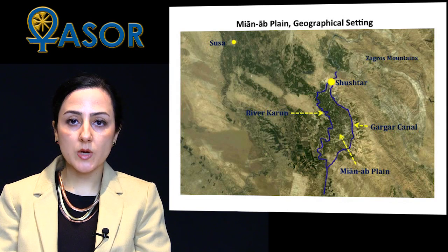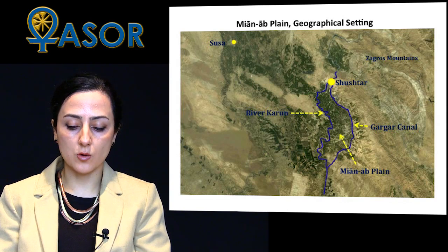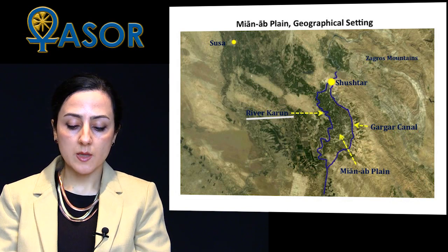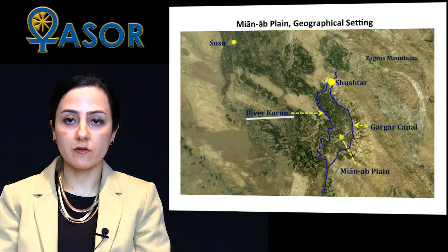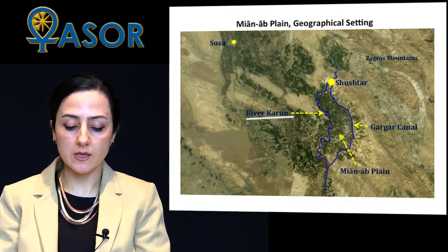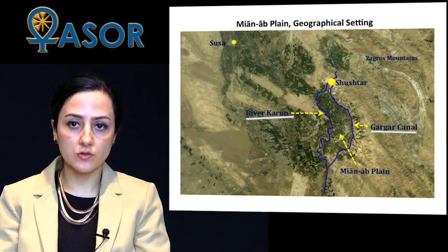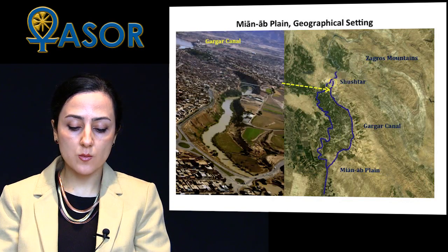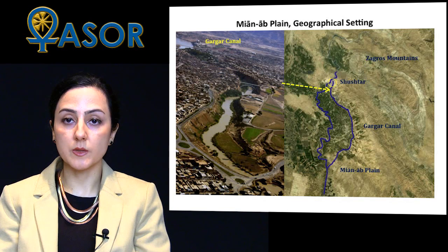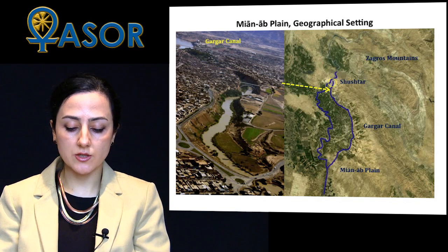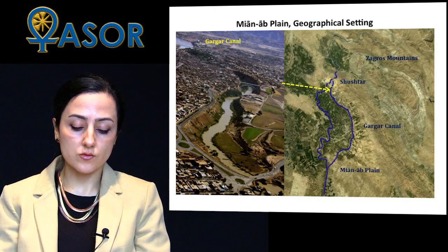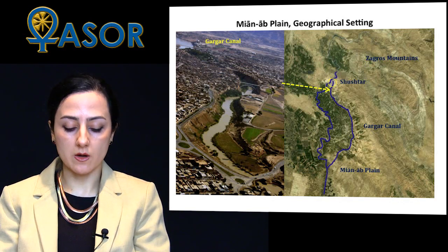The biggest permanent river of Iran, Karun, defines the western boundary of the plain of Mianab. The most renowned component of the ancient irrigated landscape is the canal of Gargar, which defines the eastern boundary of the plain. Furthermore, the historic town of Shushtar, in the northernmost part of the plain, contains several impressive ancient hydraulic structures that have been regulating the flow of the Karun River into the canal systems of Mianab.